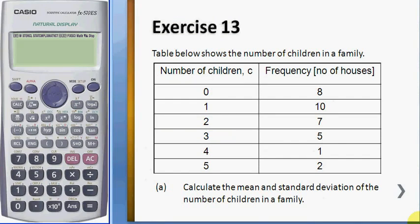To find the mean and standard deviation for grouped data, change to statistic mode. Press mode, then select stat and one variable.